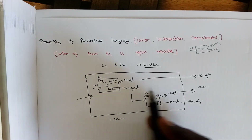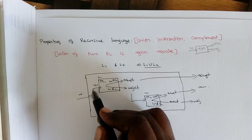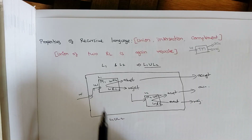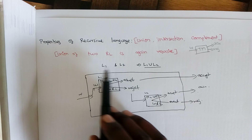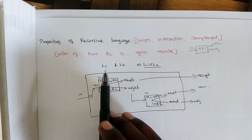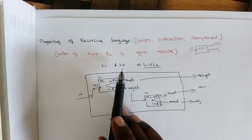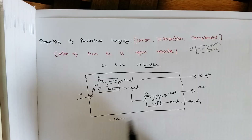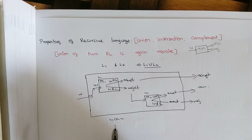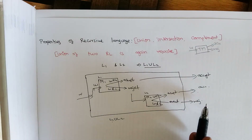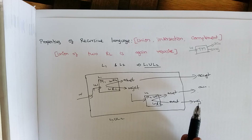So we can construct a machine for L1 union L2 that accepts all inputs contained in L1 or L2 and rejects inputs not in L1 or L2. The acceptance and rejections are properly defined, so we say the union of two recursive languages is also recursive.